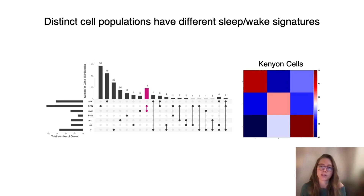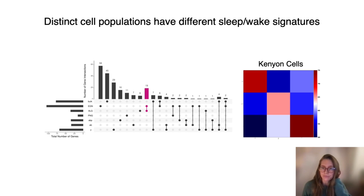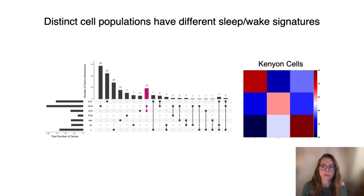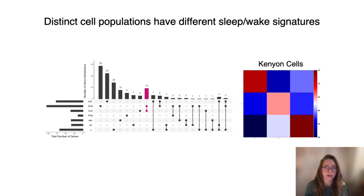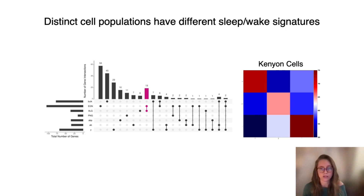We find similar results when we test the accuracy of a model trained to classify sleeping from waking cells using a different cell subtype — for example, the three Kenyon cell subtypes. When we train a classifier based on gamma subtype cells, it can quite accurately predict other gamma cells into sleep and wake. However, this classifier performs poorly when classifying cells of another subtype. Taking this together, this tells us that different cell populations have a different sleep signature.